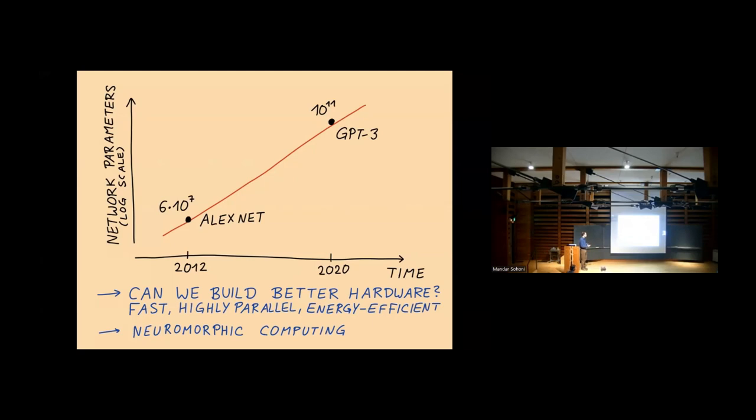Only big companies sometimes can do the training needed here. That's already bad for academic labs. But overall, this drives the question, can we build better hardware? Better hardware that is fast, highly parallel, and energy efficient. That brings up the whole field of neuromorphic computing.